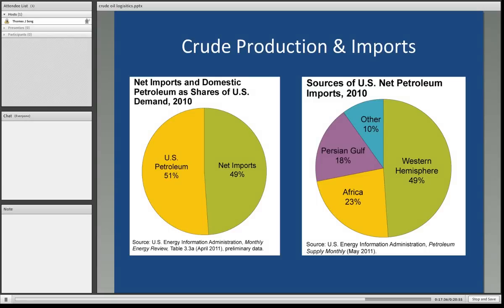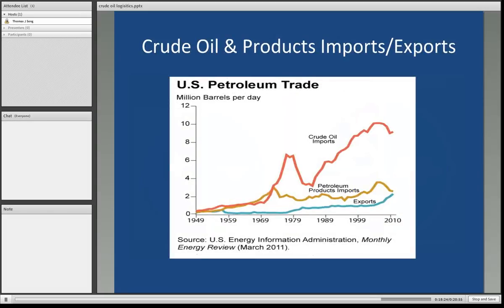Here's the comparison of domestic production and imports. Looking at net imports and domestic petroleum as shares of U.S. demand in 2010, the U.S. finally produced slightly more than half of its own demand in terms of crude oil, with net imports at about 49%. That number is expected to shrink as new shale plays in North America have become very prolific. Of the 49% of imports, the Western Hemisphere — mostly Canada, though we import some from Mexico — accounts for 49% of imports, 23% comes from Africa, 18% from the Persian Gulf, and the remaining 10% from varied other countries.